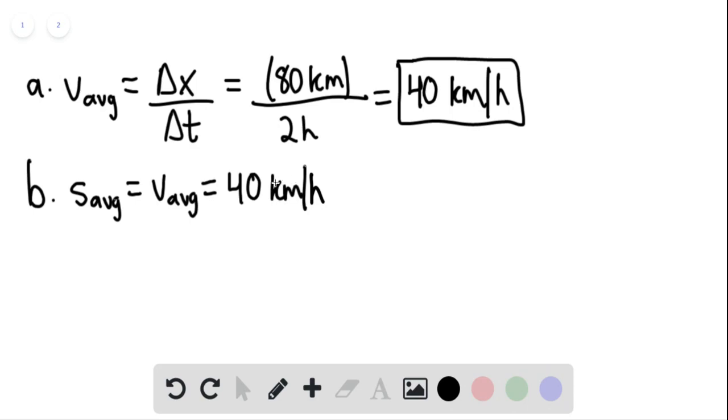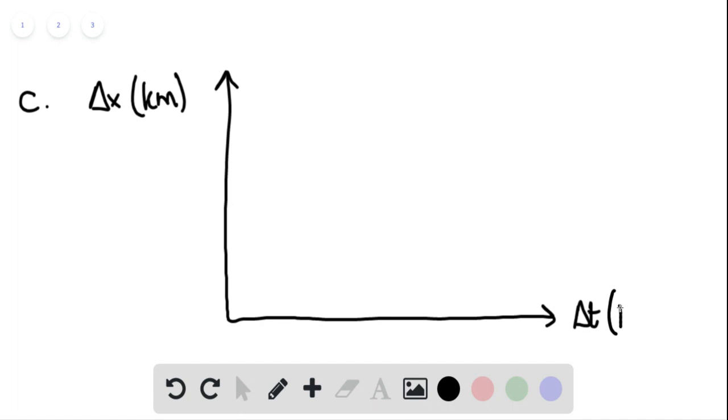And we can say for part c, the question is asking us to graph. And we can say, graph x versus t, and then indicate how the average velocity is found. So for part c, we can say that delta x would be on our y-axis in kilometers. On our x-axis, we would have delta t. This would be in hours.